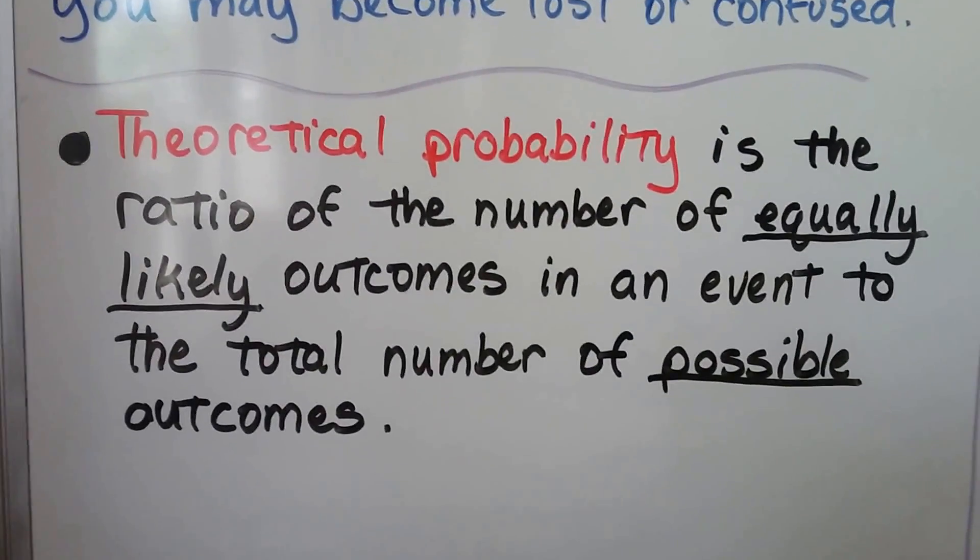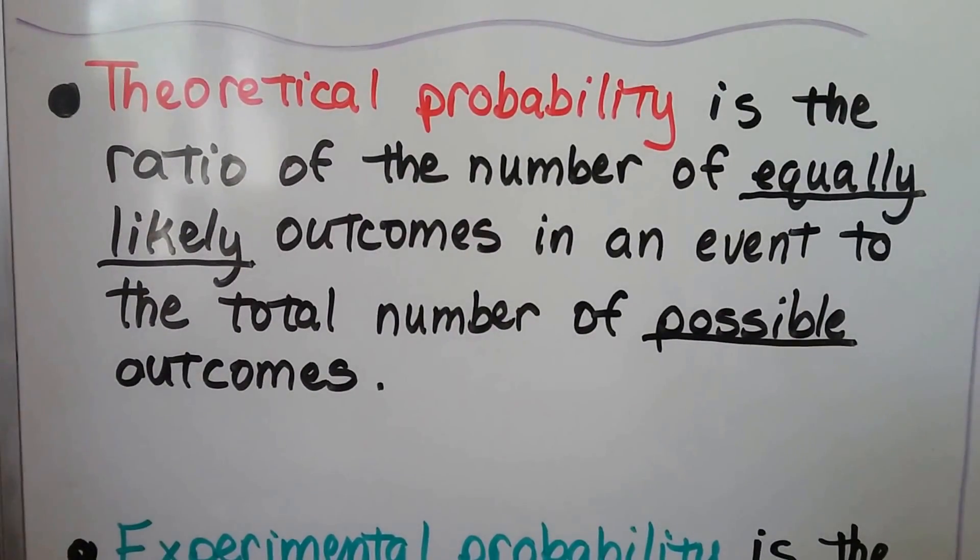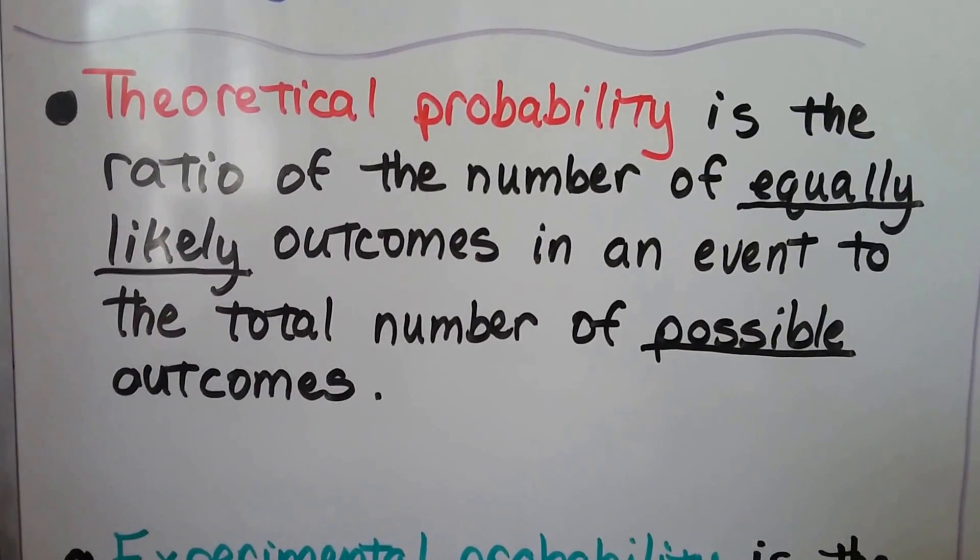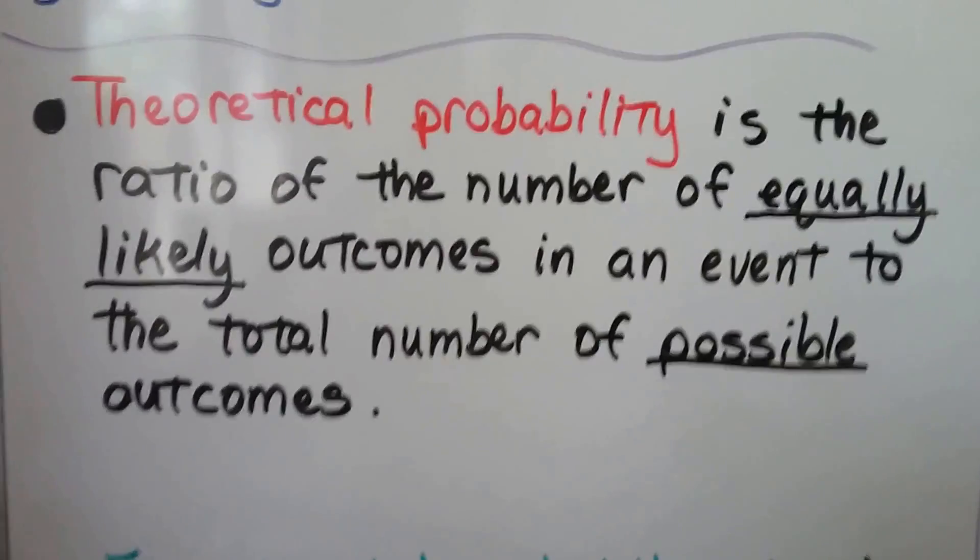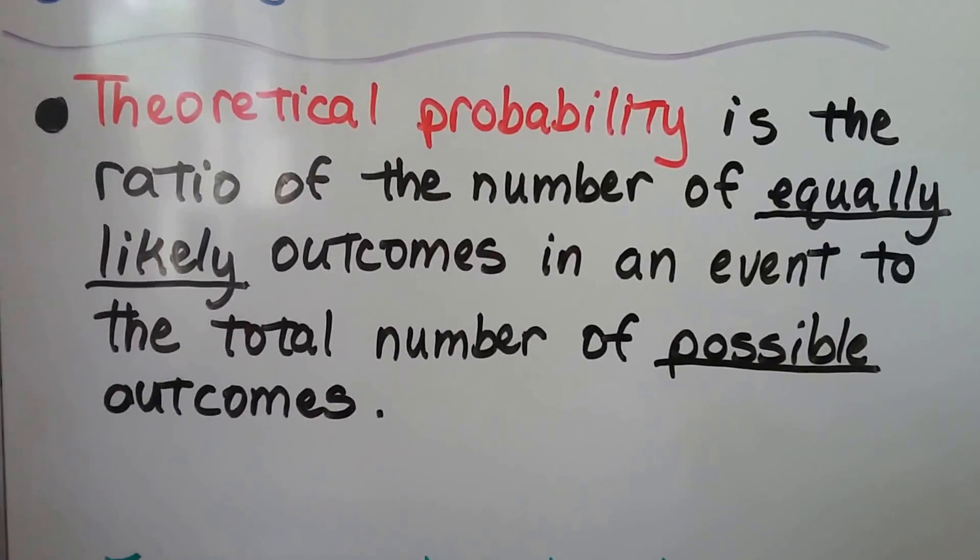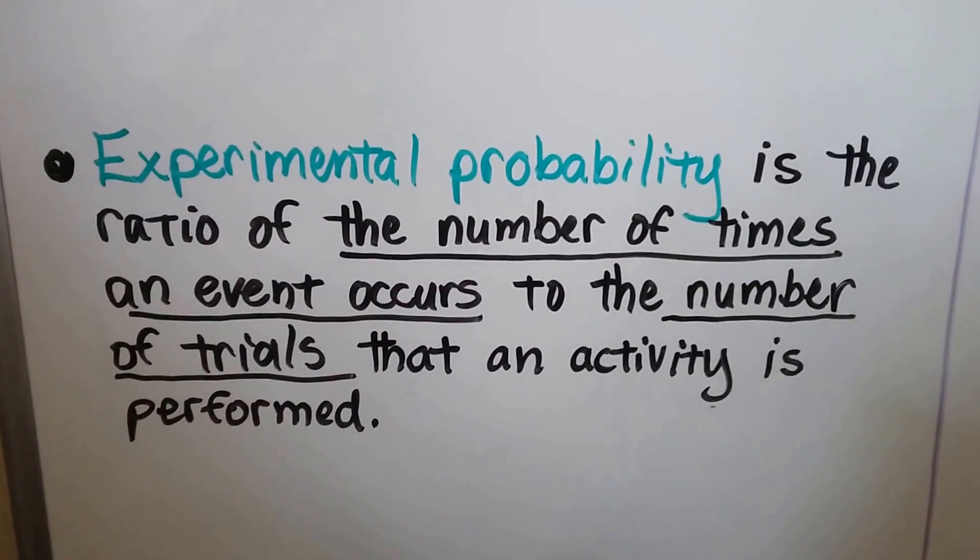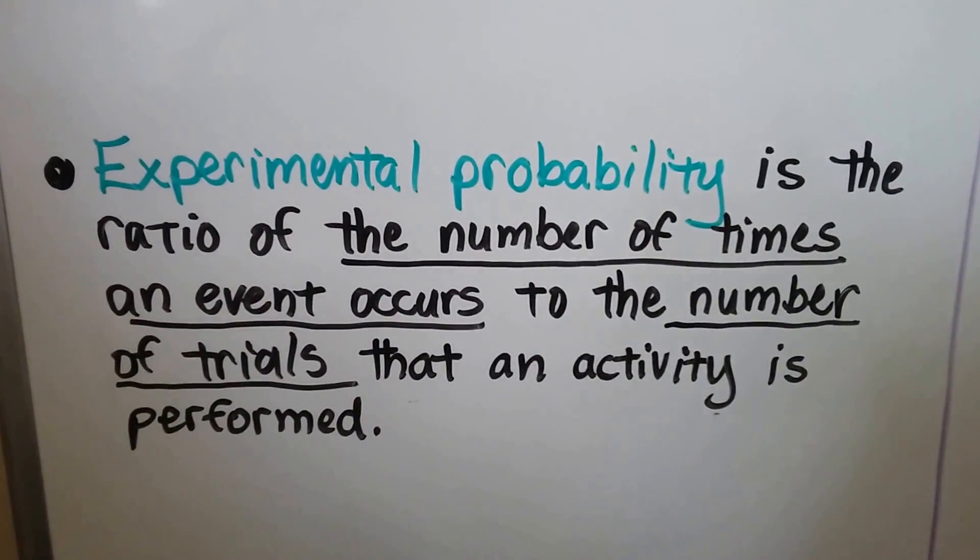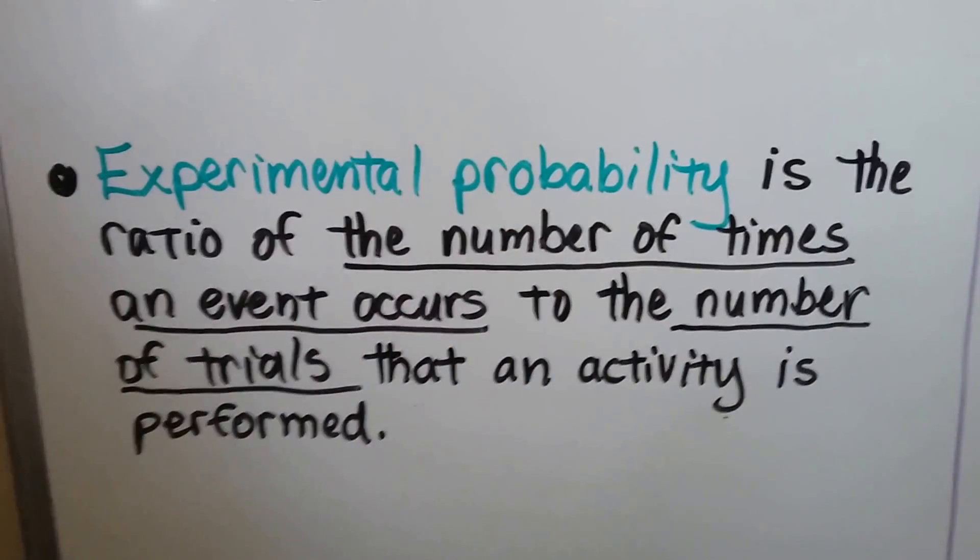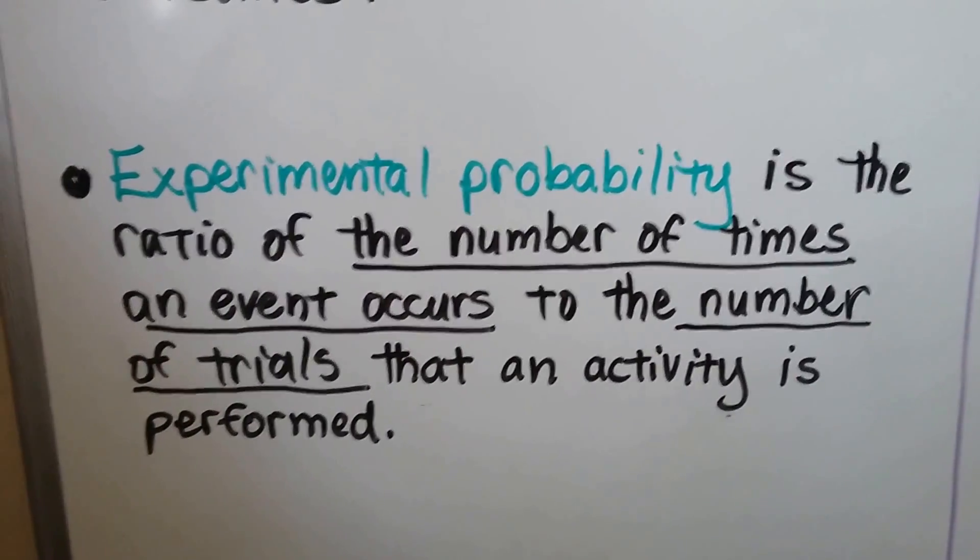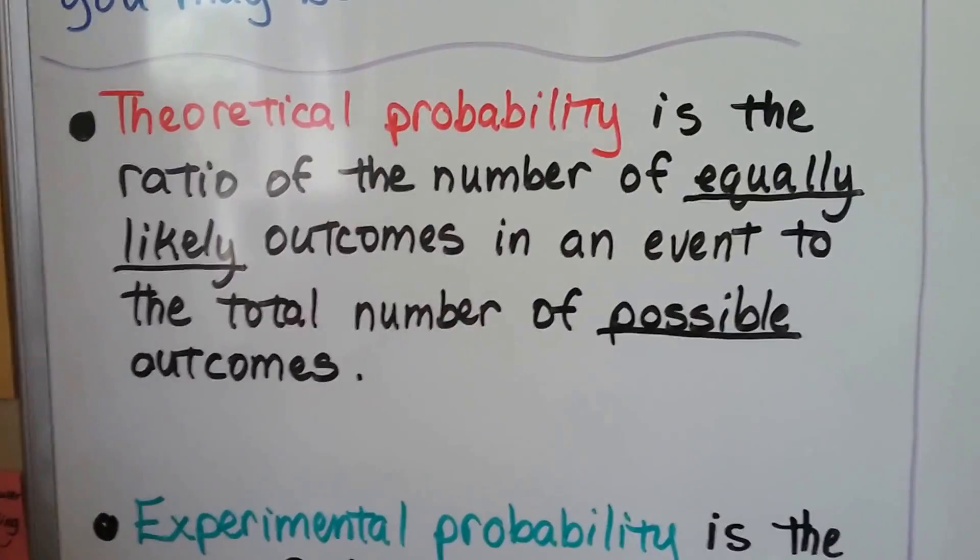Theoretical probability is the ratio of the number of equally likely outcomes in an event to the total number of possible outcomes. So it's a theory of what likely can be an outcome to possible outcomes. Experimental probability is the ratio of the number of times an event occurs to the number of trials that an activity is performed. So for experimental probability, we're actually going to try trials. In this one, we're going to use theories of what could happen.